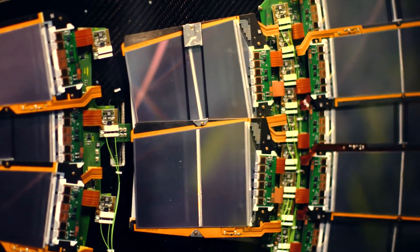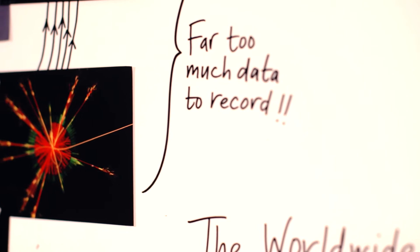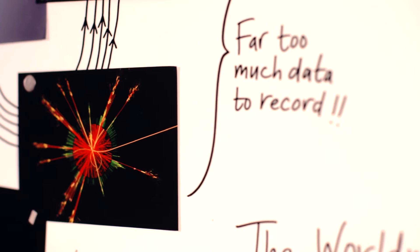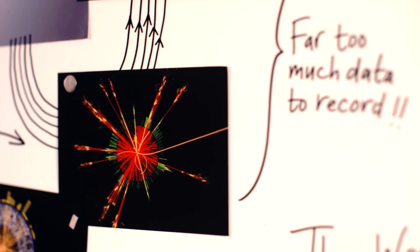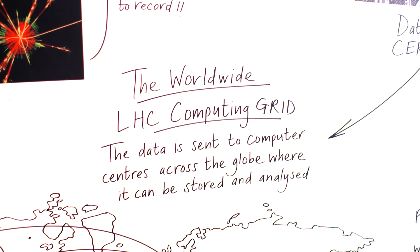The detectors create enormous amounts of data coming from each collision. Then the stuff that is likely to be more interesting is processed through CERN's computing farms and parceled around the world, and that's analyzed by physicists at CERN and also at all of CERN's partner universities.